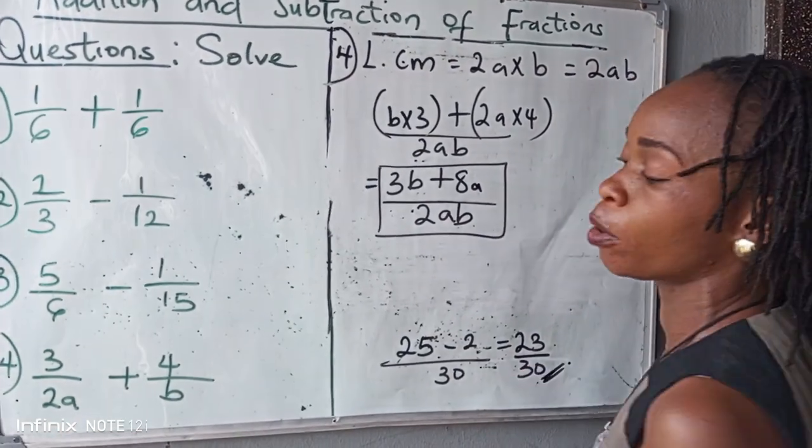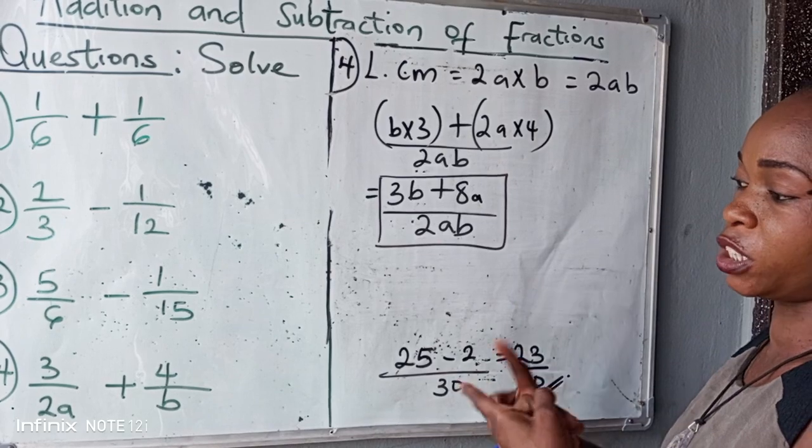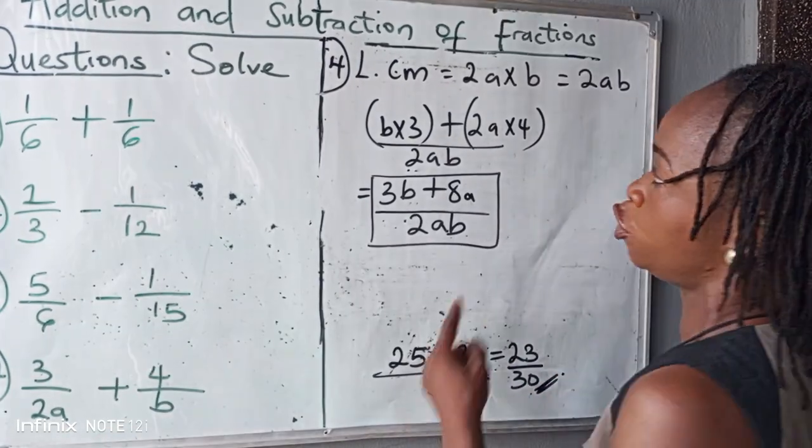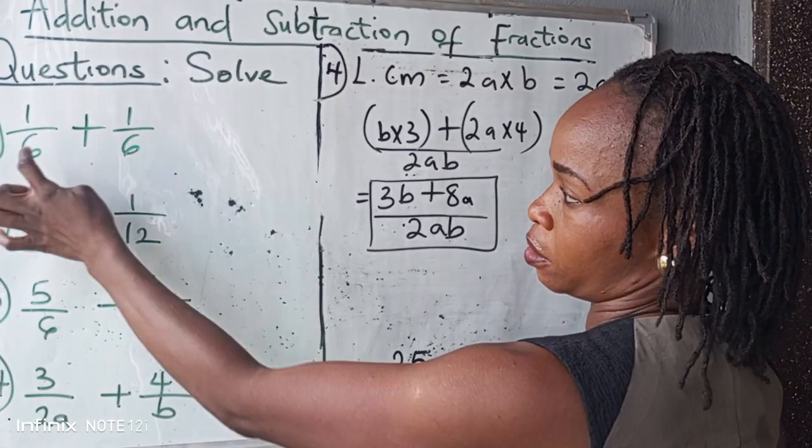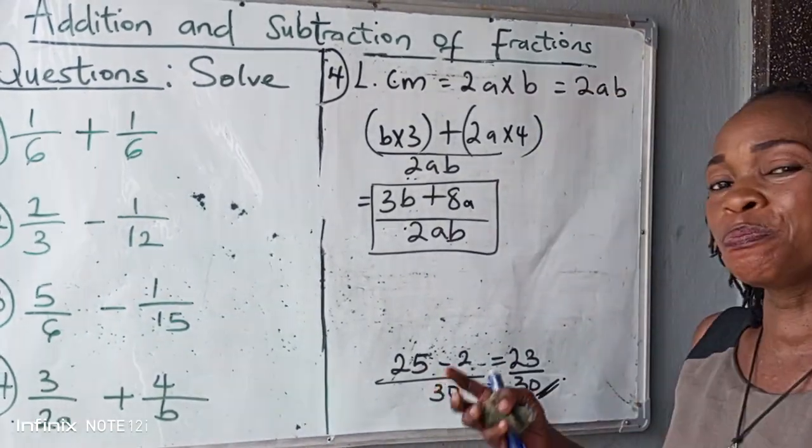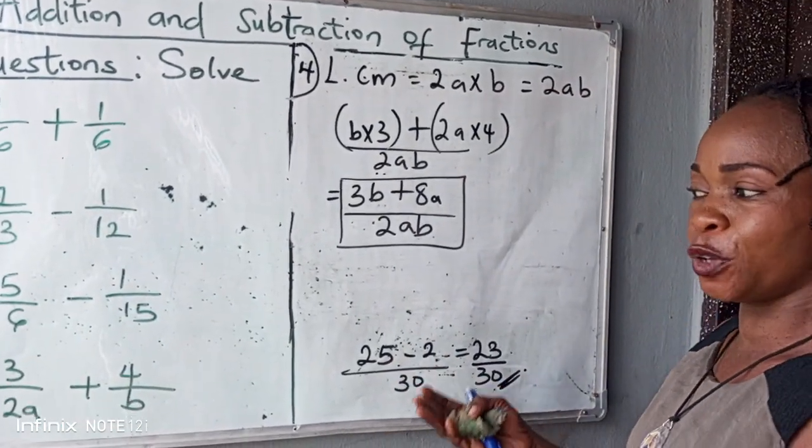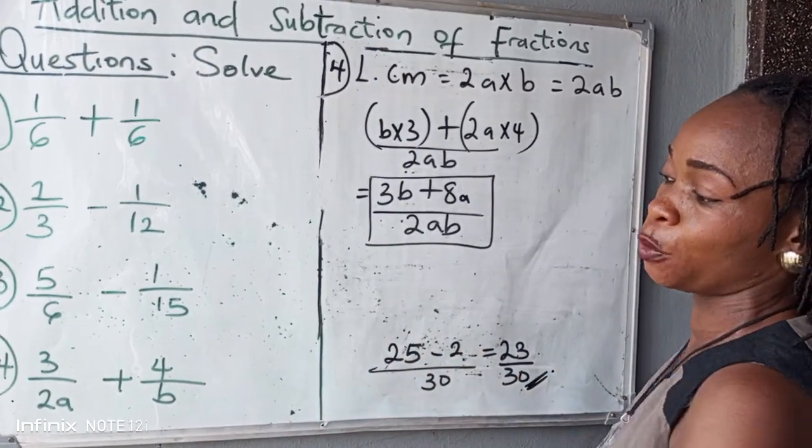And when you have two uncommon denominators there, what do you do? Multiply the two denominators to give your LCM. Please do not multiply. Do not multiply when you have big numbers when you can obviously use smaller numbers.